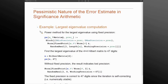Now the nature of error estimate in significance arithmetic is pessimistic. You can actually get a lot more correct digits than Mathematica tells you and it is important to realize when that happens.